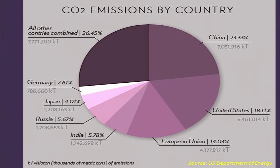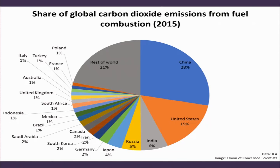Looking at carbon dioxide emissions by country: China emits around 23.33 percent, the United States 18 percent, the European Union 14 percent, India 5.78 percent, and other major countries such as Russia, Japan, and Germany together emit almost 26 percent. China is the highest emitter, with significant development ongoing. For global share of CO2 from fuel consumption only, China accounts for 28 to 29 percent and India is hardly 6 percent.